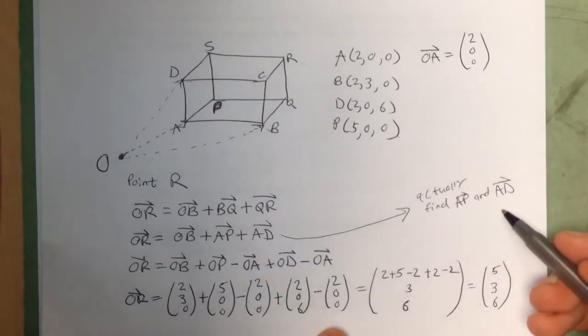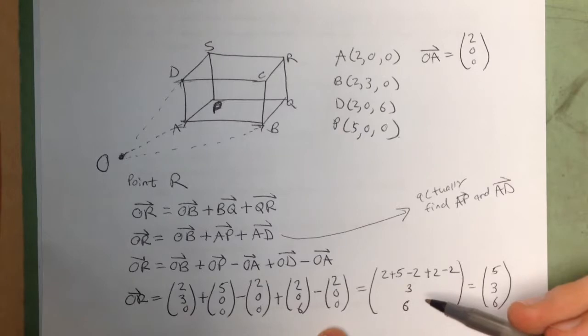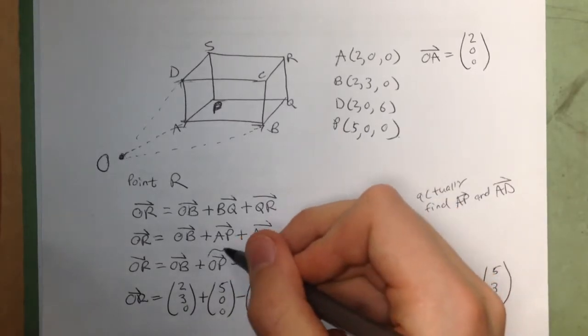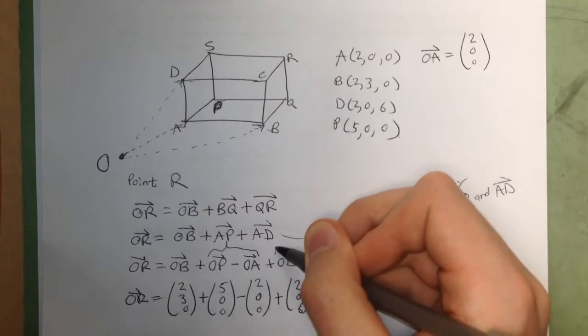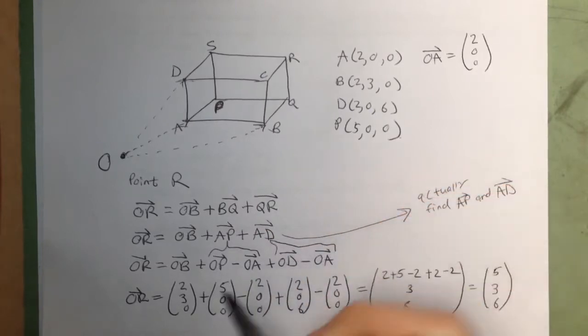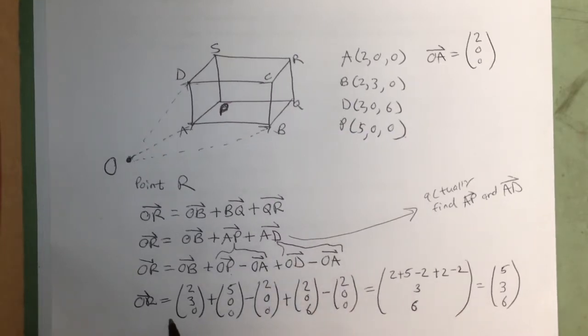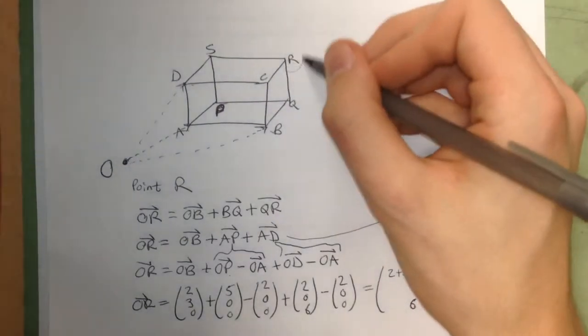However, since I only care about point R, I just decided to break those down further because I know that AP is just OP minus OA and AD is just OD minus OA. So I just broke it down further, plugged in all of my points in vector form, and then just simplified it to find the coordinates of this point R.